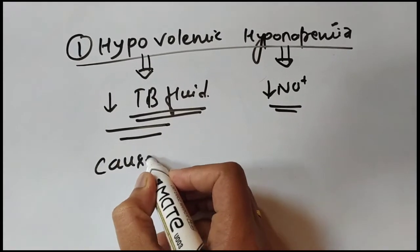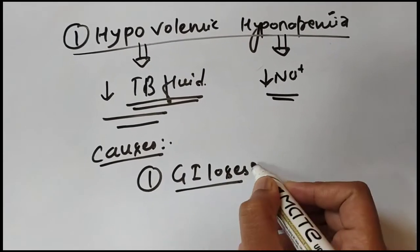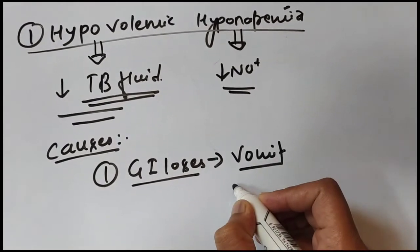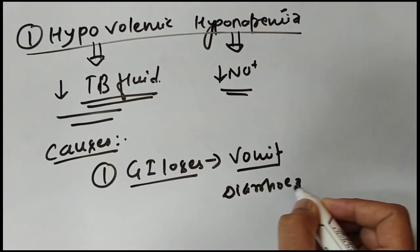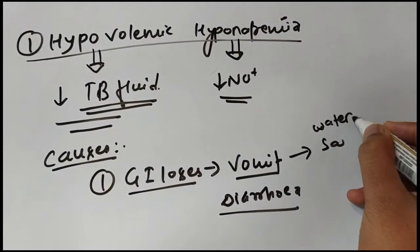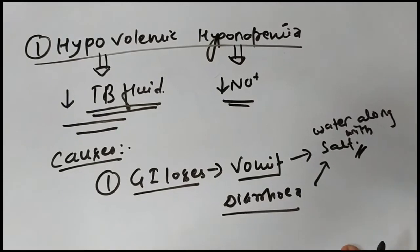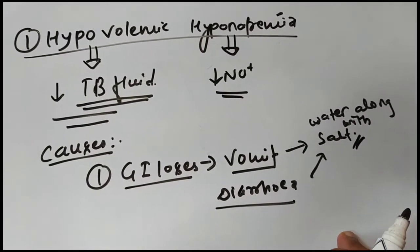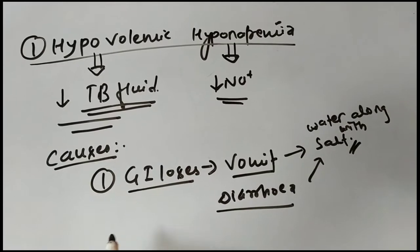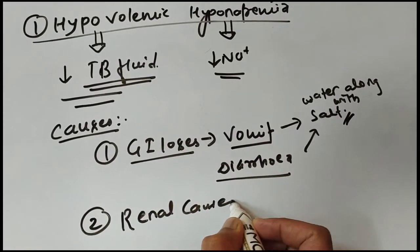The first cause is GI losses — gastrointestinal losses. When a person vomits or has diarrhea, there is excretion of water along with salt. So in vomiting or diarrhea, water and salt are lost, leading to a decrease in body fluid and a decrease in sodium levels.